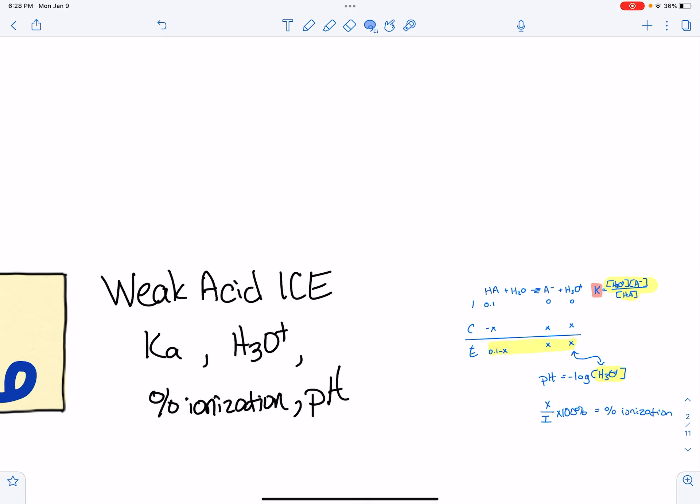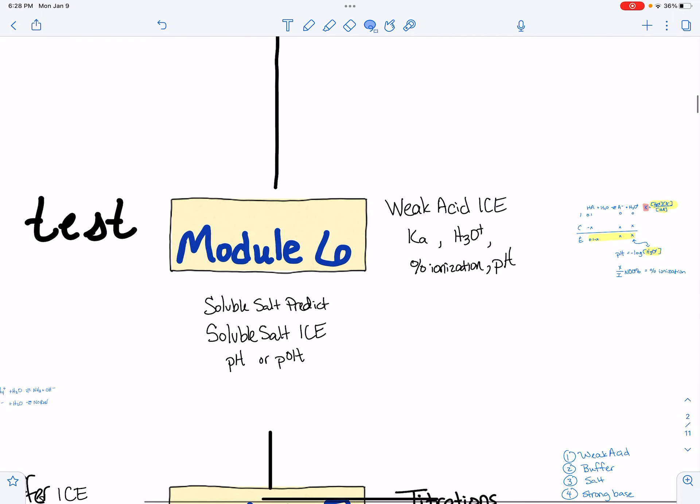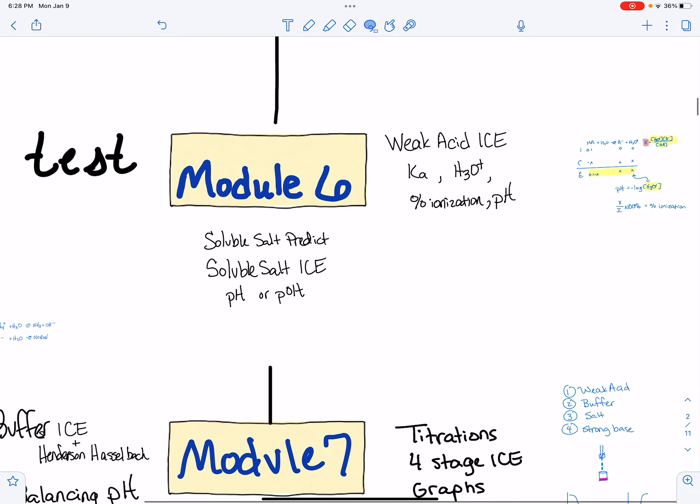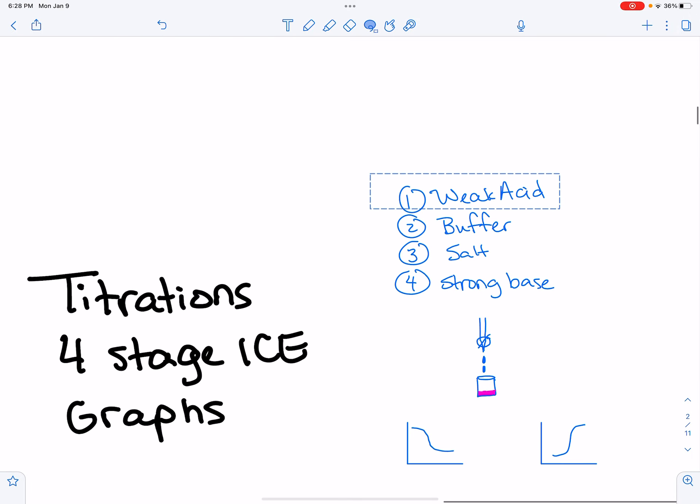So that's your weak acid ice. And I'll tell you the other reason that you want to keep that in mind and maybe like make a summary chart for yourself is by the time we get to titrations, the first part of a titration, you use a weak acid set up just like that to figure out the pH. So you're going to come back and use it in the first stage of a titration.